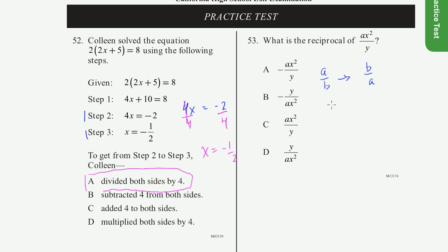If you have, I don't know, xy over ab, the reciprocal is going to be ab over xy. So if you have ax squared over y, its reciprocal is just going to be y over ax squared. That easy. And that is choice d, y over ax squared. You just have to know to flip this fraction right there.